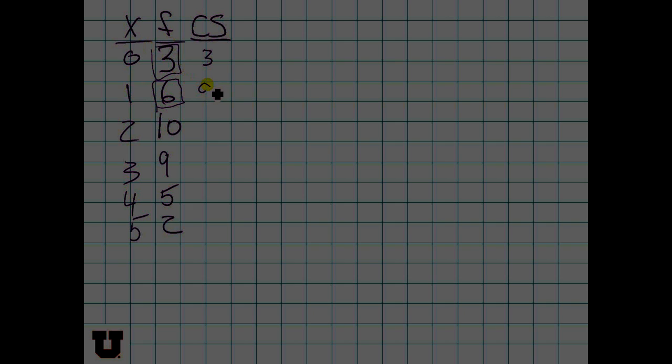So how many observations do we have with a value of 0 or less? The answer is simply 3. How many observations do we have with a value of 1 or less? Well, we've got these 6 over here, which have a value of 1, and we've got the 3 up above. So we've got 9.